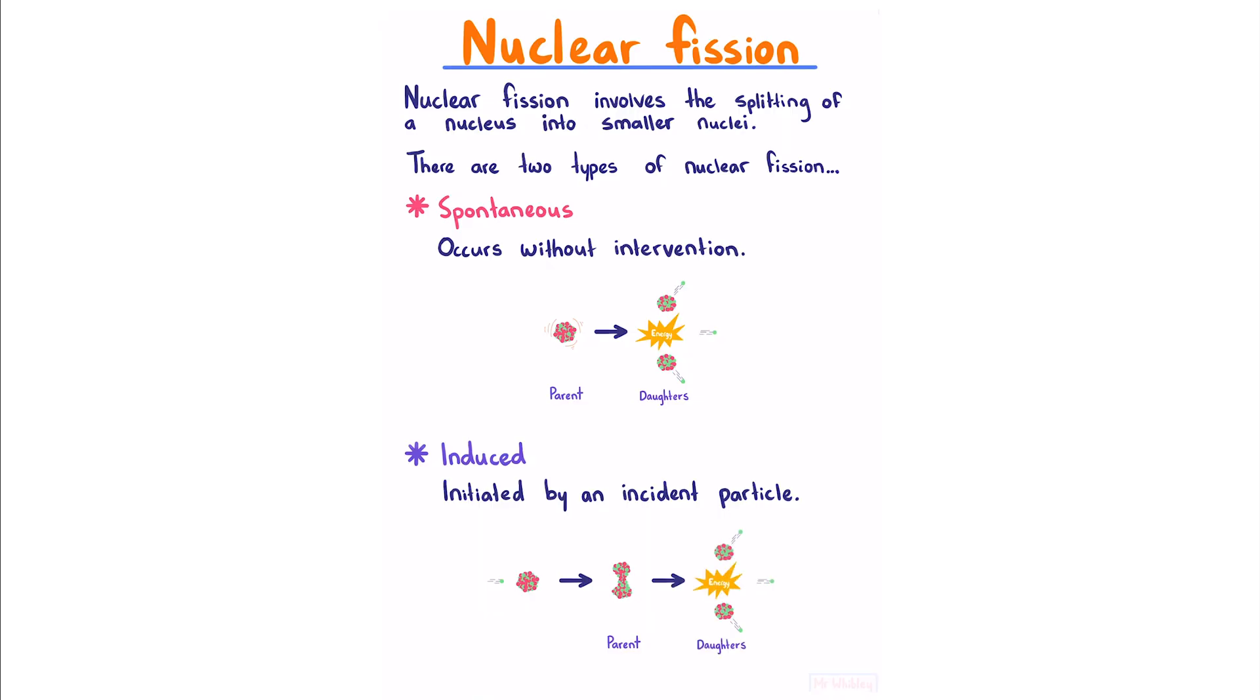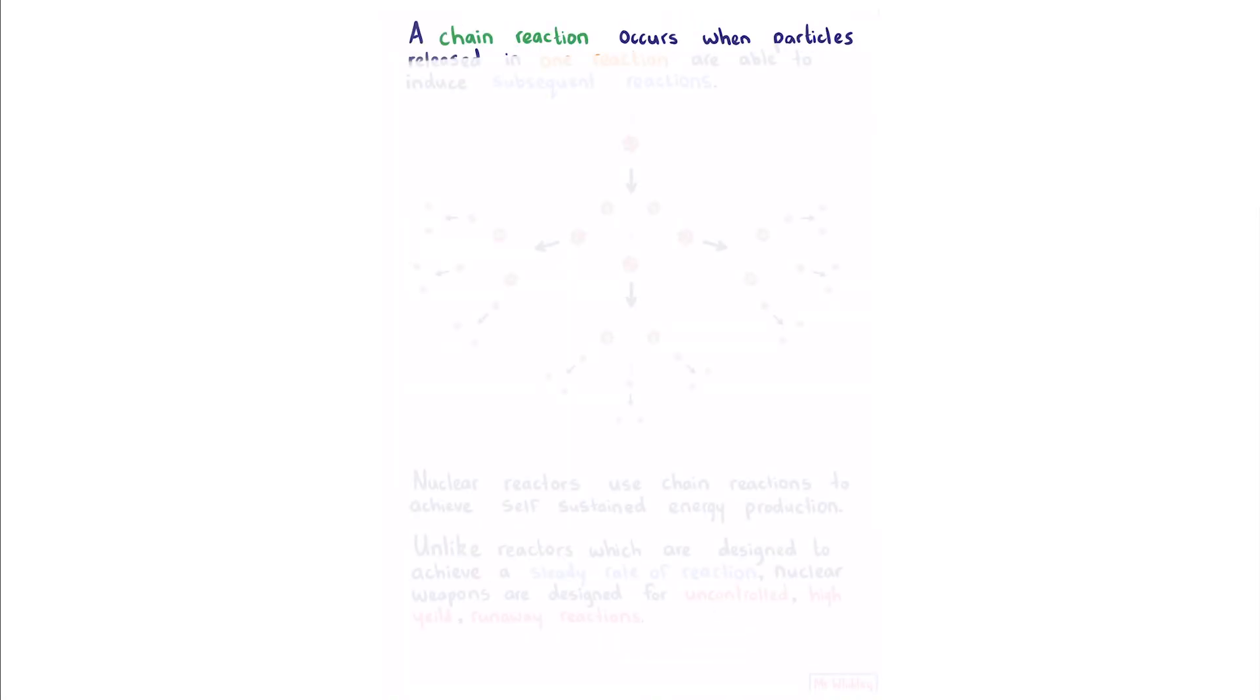A chain reaction occurs when particles released in one reaction are able to induce subsequent reactions.